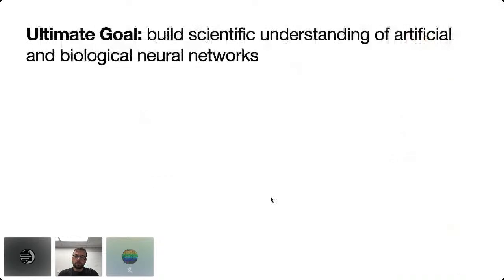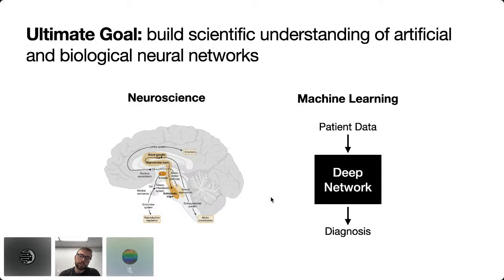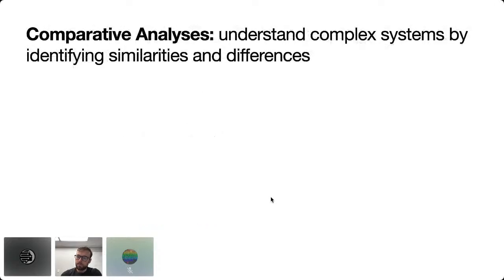The high-level goal of our work is to develop tools that help us understand neural networks. In neuroscience we want to understand how neural activity in different brain regions contributes to behavior and psychiatric disease. In machine learning there are many scenarios where we'd like to better understand how deep artificial networks function and not treat them as black boxes.